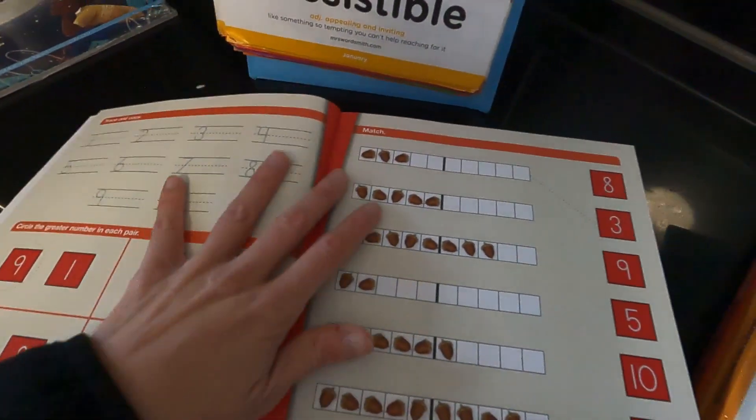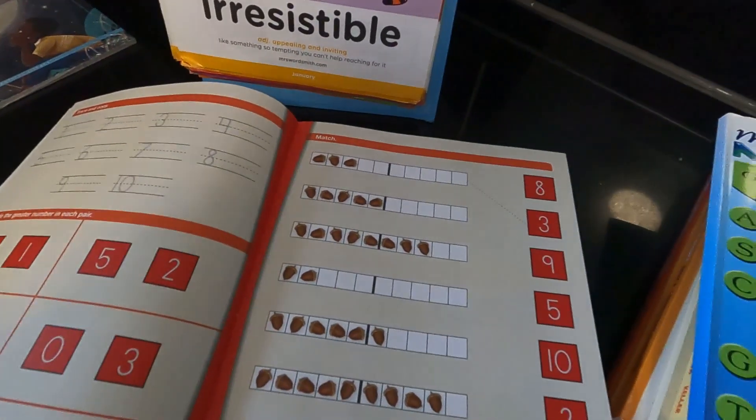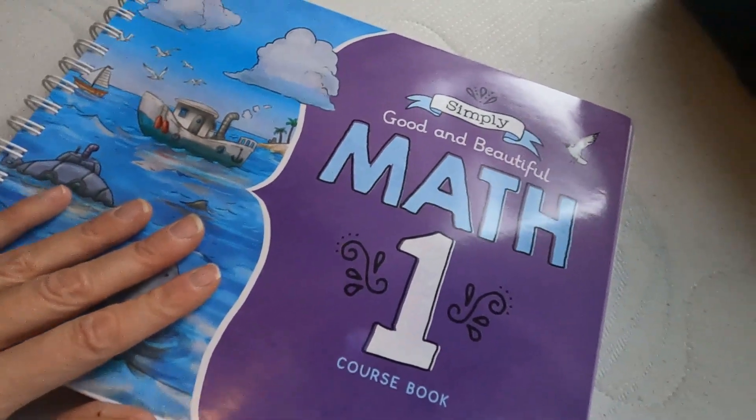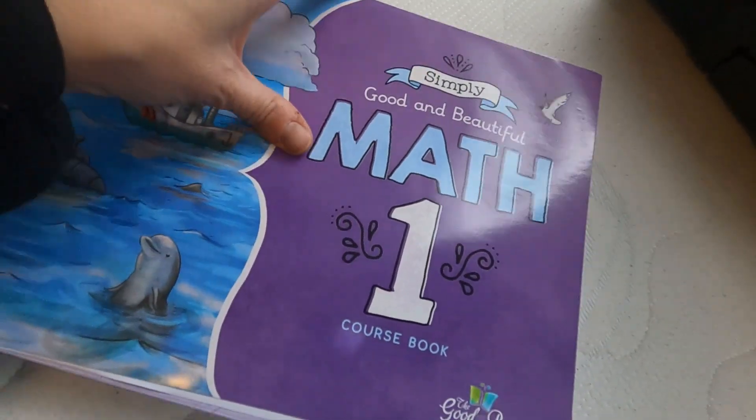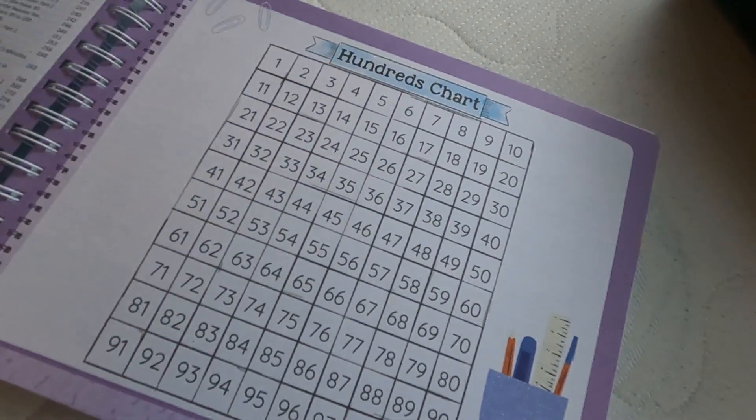So this is very early on in the grade one, so you do get to other stuff as well. Okay, so this is spiral. This is The Good and the Beautiful. As you'll see, it is beautiful.